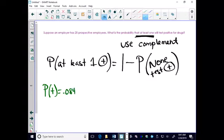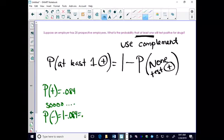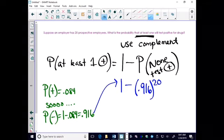The probability that you test positive, remember last problem, was 8.4%. So that means the probability you test negative is 91.6%. Again, we're using that complement. Remember we're looking at the probability that none test positive. That means all 20 people are negative.